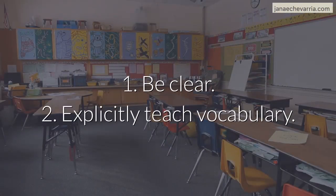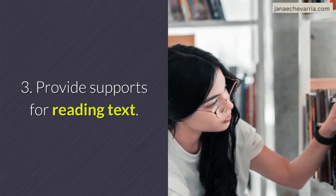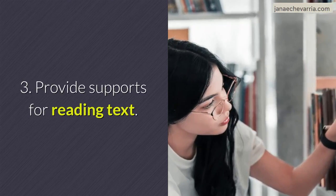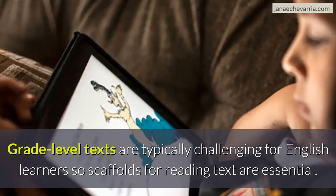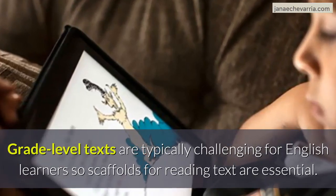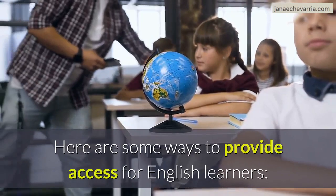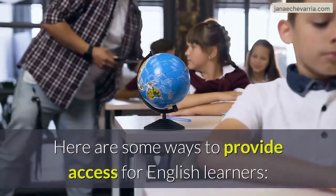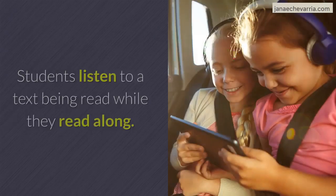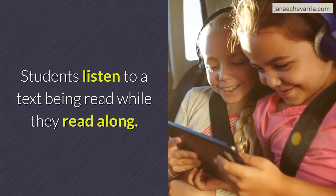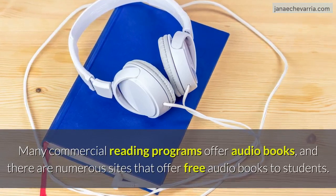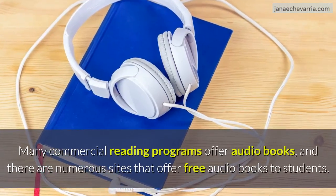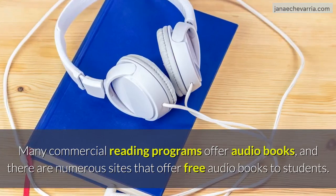So far we've talked about two ways to support English learners: one is to be clear, and the second is to explicitly teach vocabulary. The third way is to provide supports for reading text. Grade-level texts are typically challenging for English learners, so scaffolds for reading are essential. Here are some ways to provide access for English learners. Audiobooks: students listen to a text being read while they read along. Many commercial reading programs offer audiobooks, and there are numerous sites that offer free audiobooks to students.